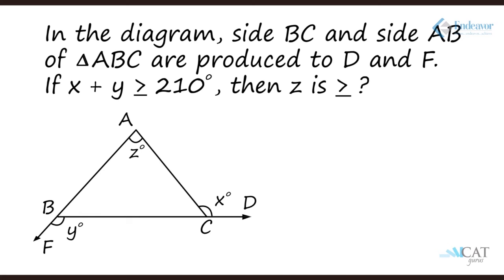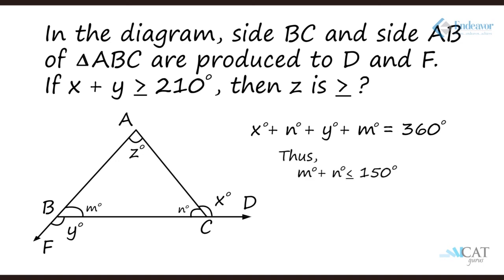Let us take another example. In the given diagram sides BC and AB of triangle ABC are produced to D and F respectively. If X plus Y is greater than or equal to 210 degrees, then Z is greater than how much? X plus Y together with internal angles B and C should equal 360 degrees. So if X plus Y is greater than 210 degrees, the internal angles B and C will be less than 150 degrees. Since angle Z totals 180 degrees with angles B and C, angle Z will be more than 30 degrees. These were the basic properties of triangles, and we shall apply the same to find out many more things in the sessions that follow.